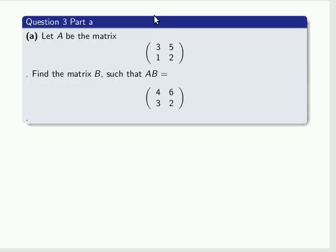The first part is A, and we're given that capital A is the matrix as given there, and we're actually not told what matrix B is, but that the multiplication of A and B actually gives 4, 6, 3 and 2.